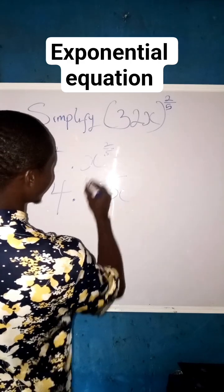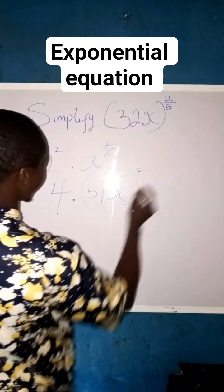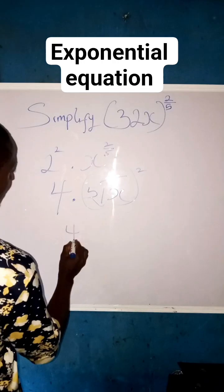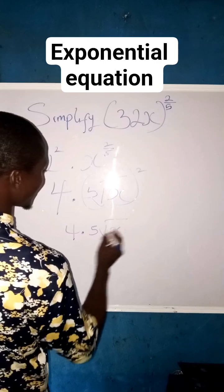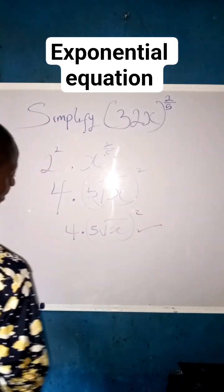Then x raised to power times, and multiply by these 2. So our final answer will now be what? 4 times the fifth root of x squared. This is our final answer.